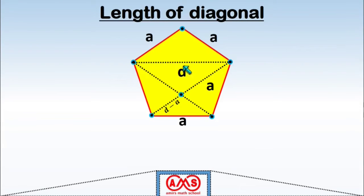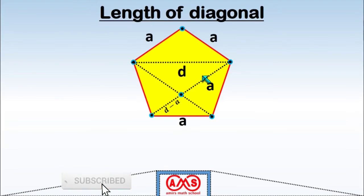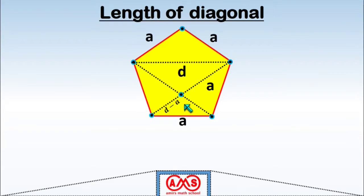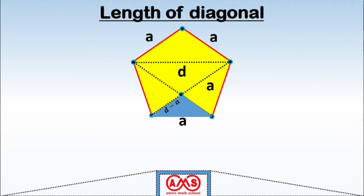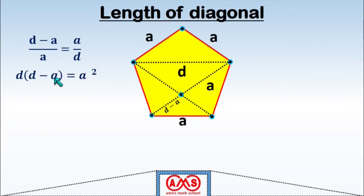Consider these triangles. We can prove that two of these triangles are congruent, because their sides are equal and they share a common side. We can also prove that two of the triangles are similar, because corresponding angles are equal, and these two angles are vertically opposite and thus also equal. In case of similar triangles, the ratio of corresponding sides are equal. So we can write: (D minus A) divided by A equals A divided by D. From this, D times (D minus A) equals A squared, giving D squared minus AD minus A squared equals 0.